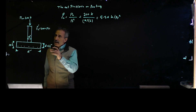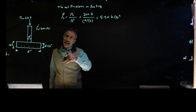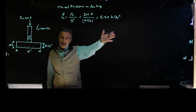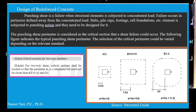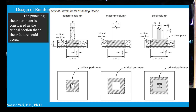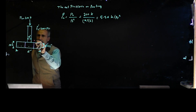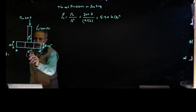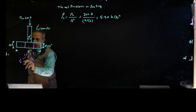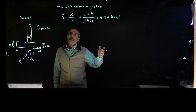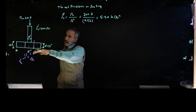The punching shear check depends on which code you're using. The United States ACI code is different from the British Standard code and the European code. We're designing here in the United States, so we're going to use the ACI code. Per ACI, for punching shear, you take a distance of D over 2 outside the face of the column on all four sides, forming a perimeter all around.